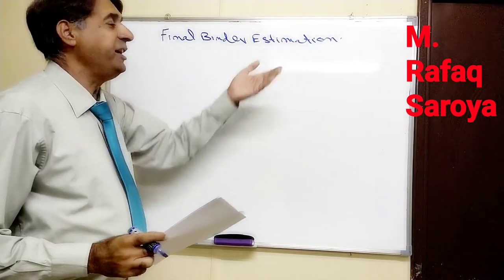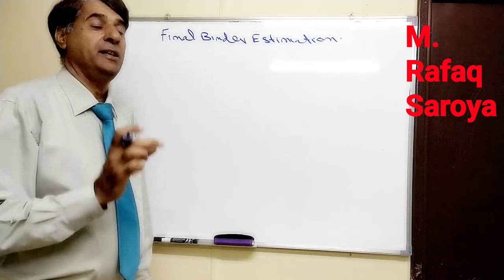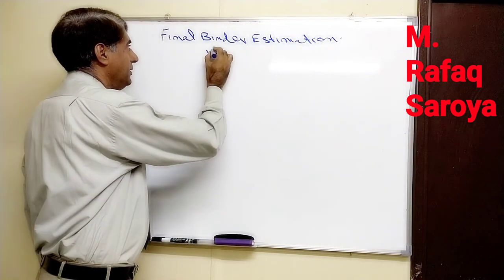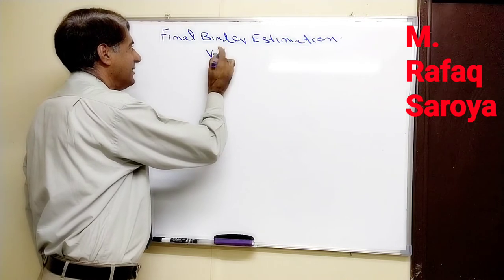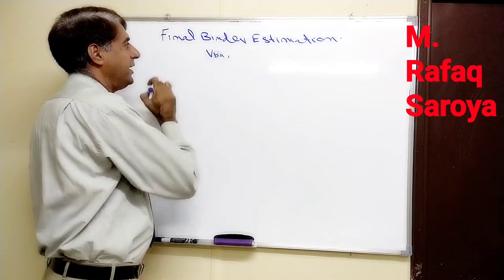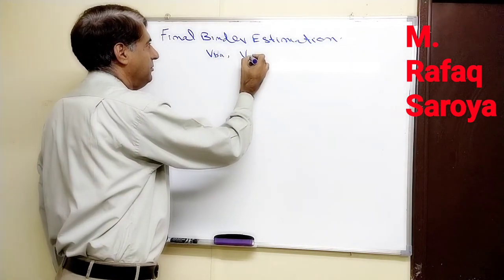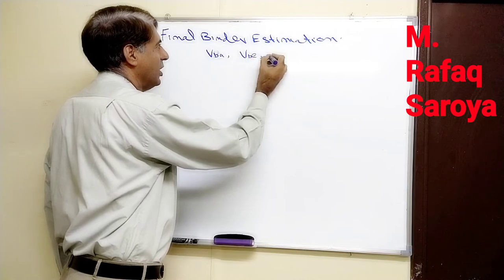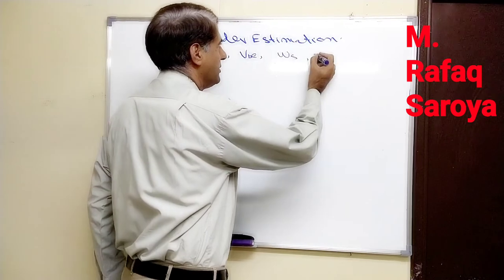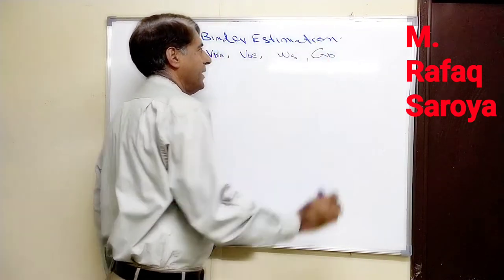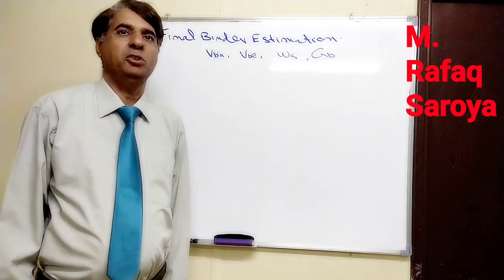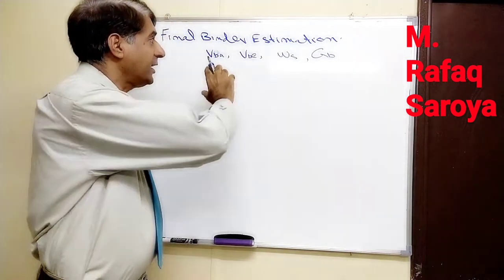Now, as I have written, final binder estimation - what do you mean by this? It means now we have determined VBA for each design aggregate structure, VBE which is a constant, WS, and lastly GB. All these values are known to us. In all my previous videos, I have done the calculation for all these.